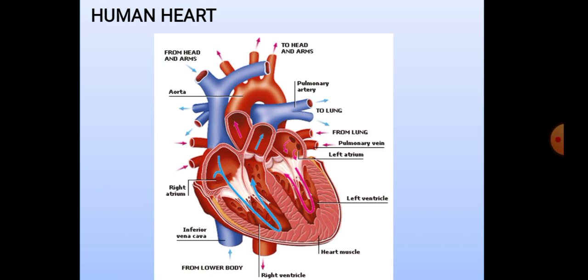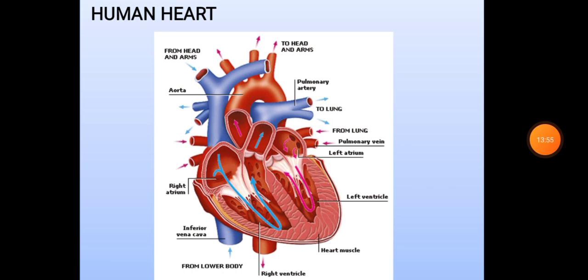Double circulation is the type in which blood passes through the heart twice. Higher vertebrates like birds and mammals exhibit double circulation. Blood pressure is the pressure exerted by the blood on the walls of the blood vessels. The pressure can be systolic pressure during contraction and diastolic pressure during the relaxed state.